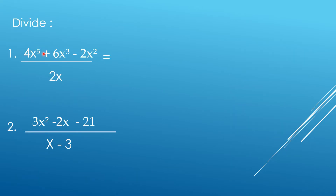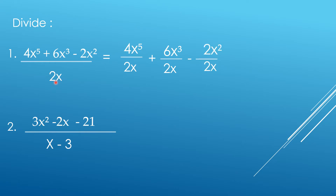So now let's divide a trinomial divided by a monomial. In this case, you're just going to divide each term by the denominator or the divisor, which is 2X: 6X cubed divided by 2X, negative 2X squared divided by 2X. It's easy to see the exponents and the variables if you separate those terms.